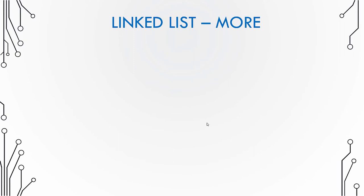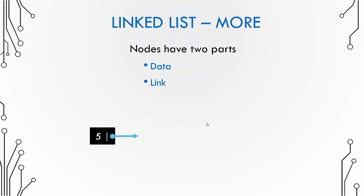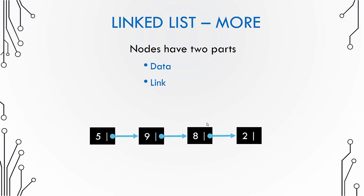Each node has data and a link pointing to the next node, which again has data and a link, and so on. The last node points to null because there is no node after it. We need a pointer to the first node called the head. To get to a particular element in a linked list, you start with the head and traverse to that particular node.